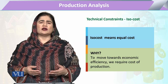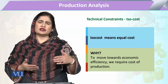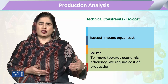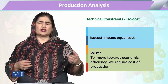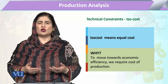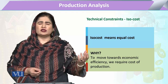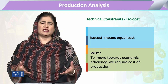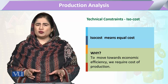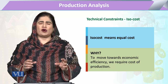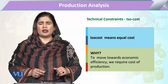اگر چھے combinations of inputs ہیں تو ہمارے پاس چھے قسم کی costs آنی چاہئیں۔ تو وہ چھے costs اگر ہم ایک ہی graph کے اوپر explain کریں تو وہ line جو ان کو join کر رہی ہوگی — یعنی جس curve کے اوپر یہ تمام points ہوں — وہ various levels of inputs کو utilize کرتے ہوئے same level of output دے رہی ہے۔